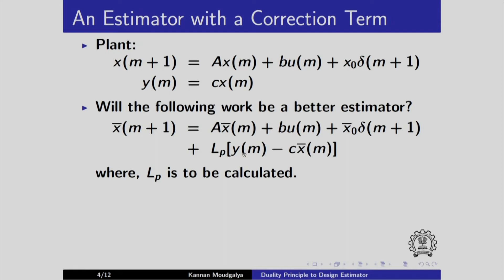I call it correction because this is y minus cx bar. In the place of cx, we put cx bar and this difference is somewhat like an error. Can we say that this looks like error? Here is the actual output. This is the predicted output from the estimator. We want these two to be close to each other. And we put this Lp and Lp is to be calculated.